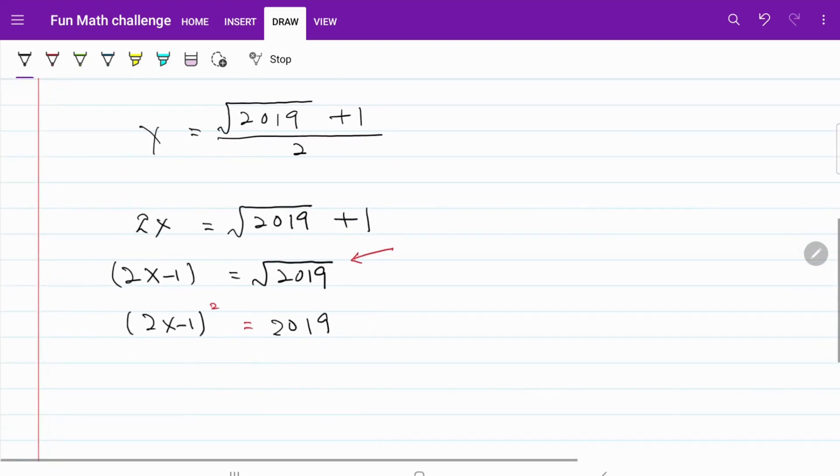And from here, I have 4x square minus 4x plus 1 is equal to 2019. 4x square minus 4x is equal to 2019 minus 1, which is equal to 2018.